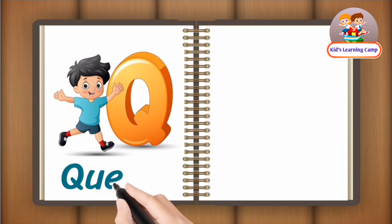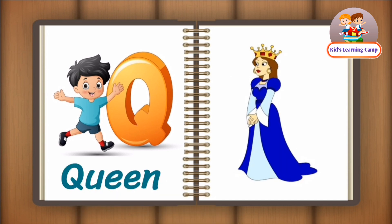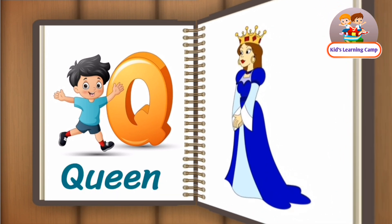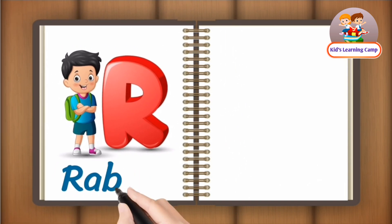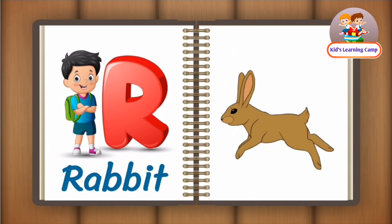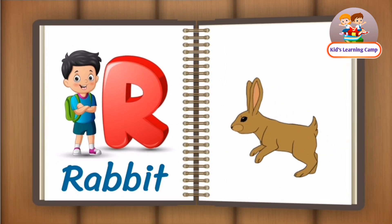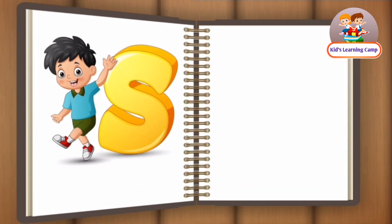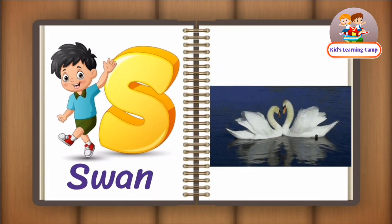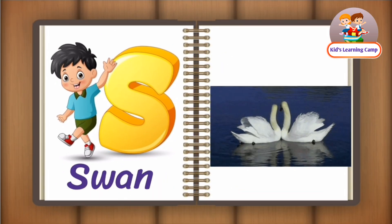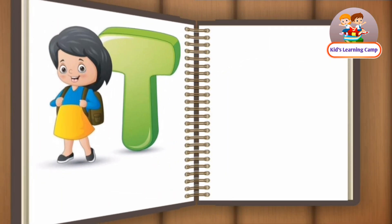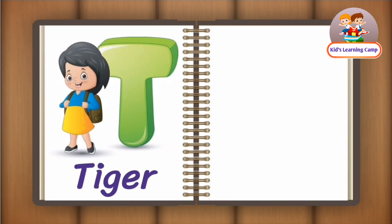Q for Queen. R for Rabbit. S for Swan. T for Tiger.